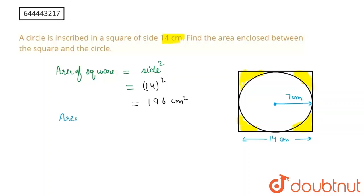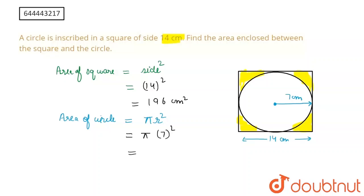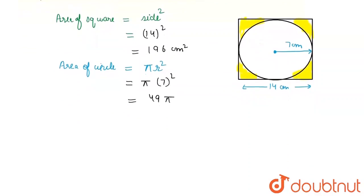The area of the circle is equal to π r squared. Therefore, the area would be equal to π into r squared, which is π into 7 squared, equal to 49π.